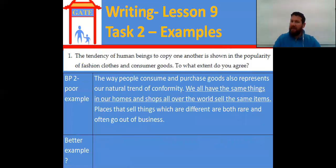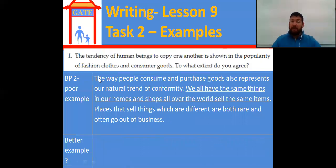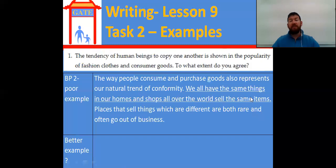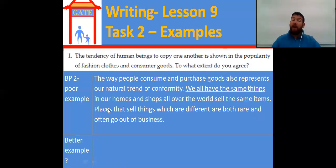Let's look at the BP2 example — the same thing, a very general example. 'The way people consume and purchase goods also represents our natural trend of conformity — one of my favorite words. We all have the same things in our homes, and shops all over the world sell the same items. Places that sell things which are different are both rare and often go out of business.' We could certainly have a more detailed example, so pause, write a better example, then come back.